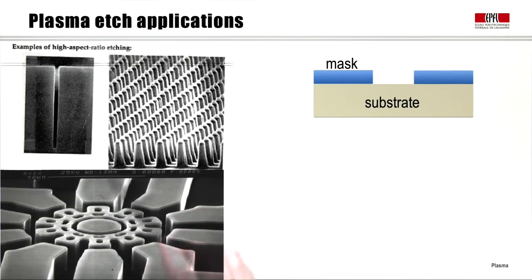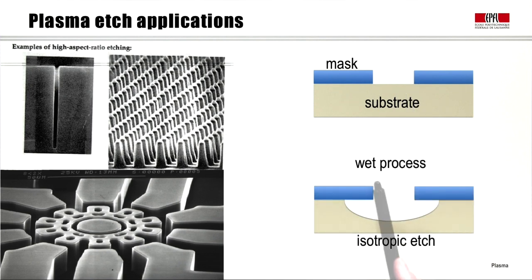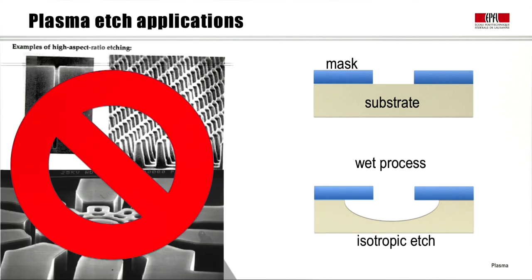If we want to make these type of structures using plasma etching with a high aspect ratio, then we have to transfer the mask features in a faithful way, high fidelity, onto the substrate. If we use a wet process, like in the early days of microcircuits, then the liquid will cause isotropic etch of this silicon wafer and not give a high fidelity reproduction of the photolithographic mask. Therefore, these type of structures cannot be made using a wet process.